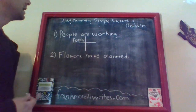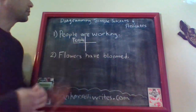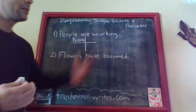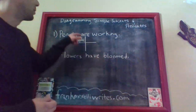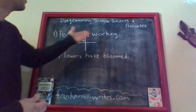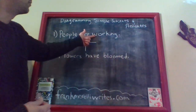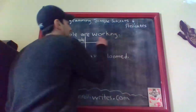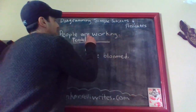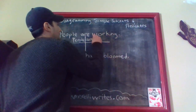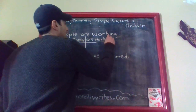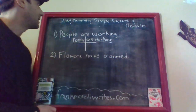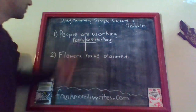Then we need to find the simple predicate. When looking for a simple predicate, the first thing we look for is action — is there a word in the sentence that shows action? Here we see the word 'working.' We know that working is an action, but also look around the word to make sure we don't have a verb phrase. In this case, we have a helping verb helping the actual predicate 'working,' so you would put the entire verb phrase — 'are working' — in the spot where the simple predicate would go.